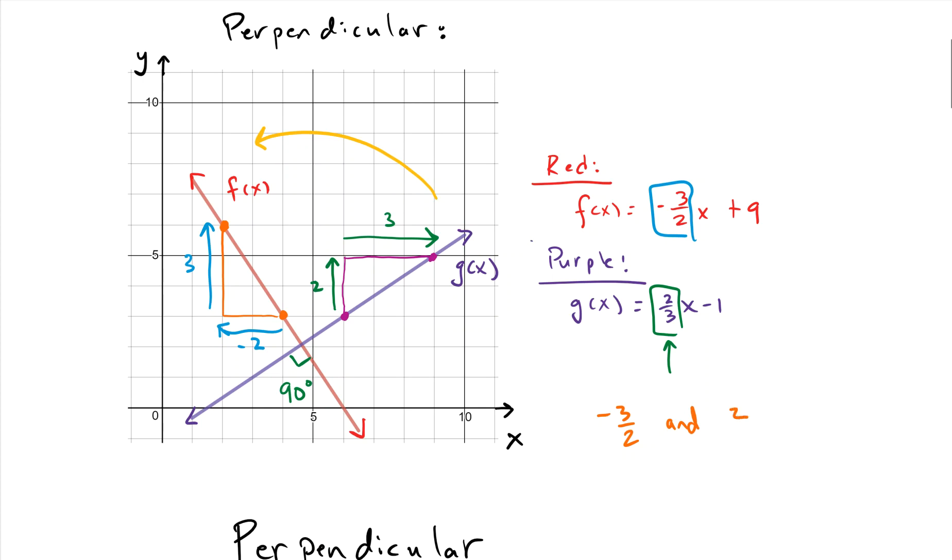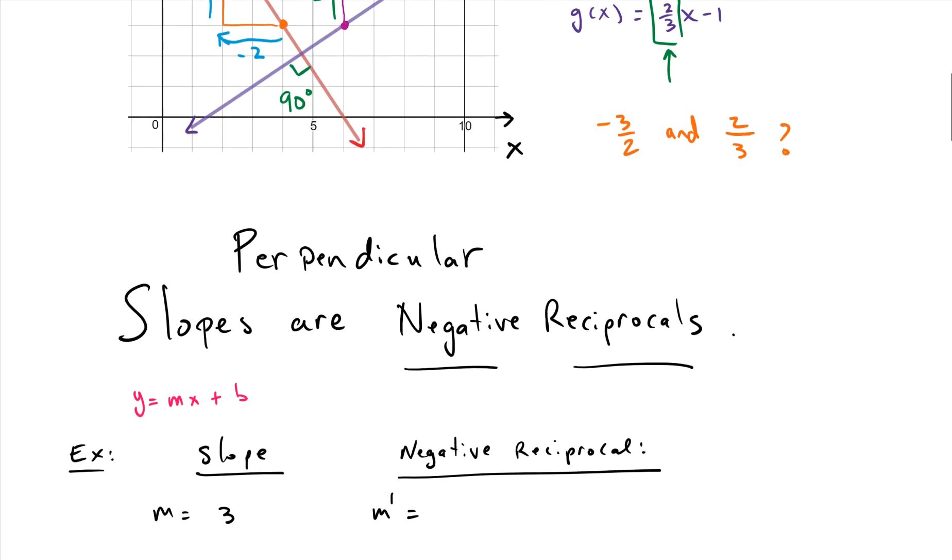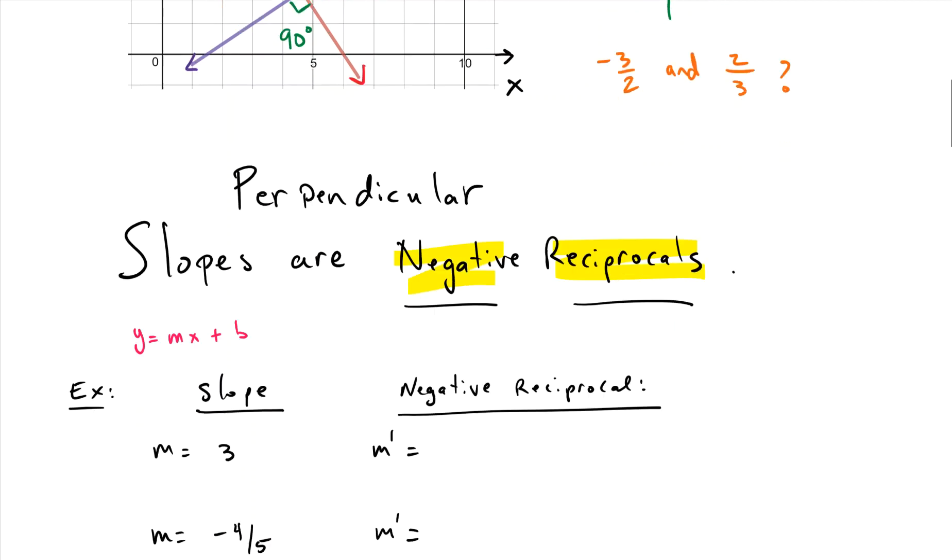Negative three-halves and two-thirds? Well, it turns out that negative three-halves and two-thirds are what we call negative reciprocals. So perpendicular slopes are negative reciprocals.